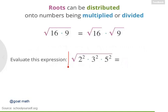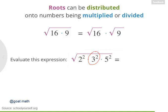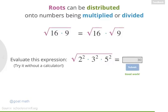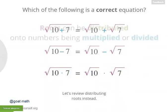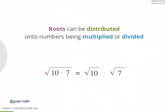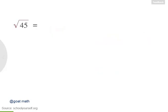For your final challenge, try evaluating the square root of 2 squared times 3 squared times 5 squared — try solving this without a calculator. To get started, roots can only be distributed onto numbers being multiplied or divided. Now suppose you have the square root of 45 — how else can we write this?